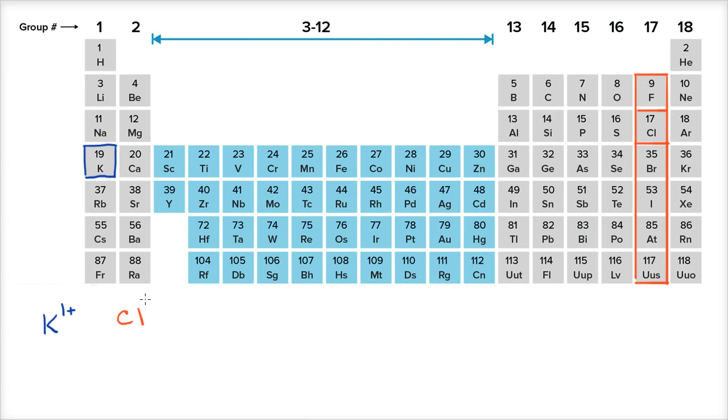So you could write it as chlorine one minus. But the way that we generally refer to an anion, a negatively charged ion, instead of just calling this the chlorine anion, we would call this chloride. So this we refer to as chloride.